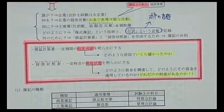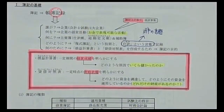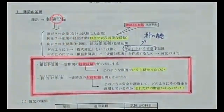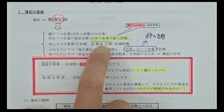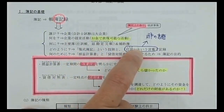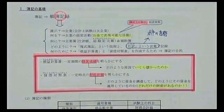損益計算書と貸借対照表を作るのは会社の経理の人です。会計士はそれをチェックします。まとめると、簿記とは大企業がお金で表現可能な簿記上の取引を仕訳帳と総勘定元帳に、複式簿記という技術と仕訳という言葉を用いて記録することです。目的は損益計算書と貸借対照表を作るためです。